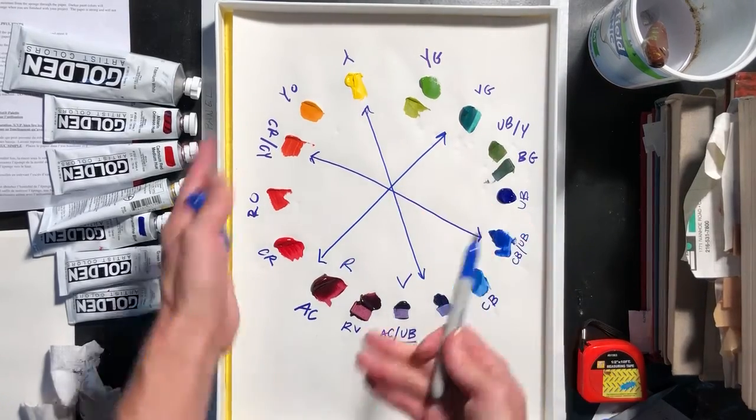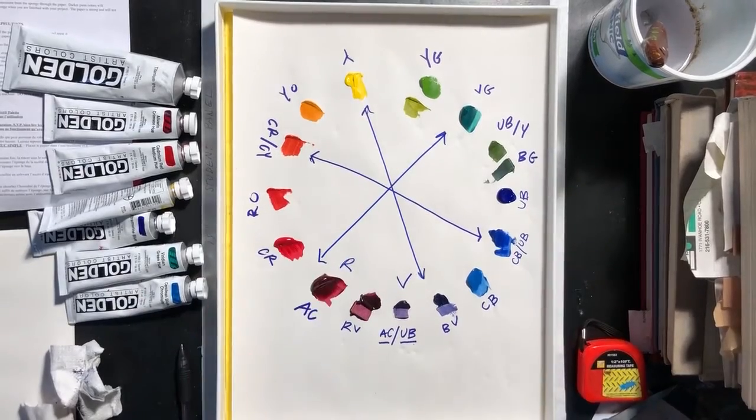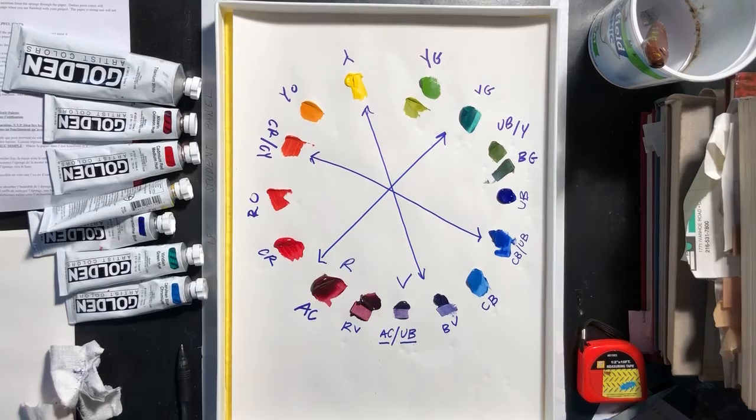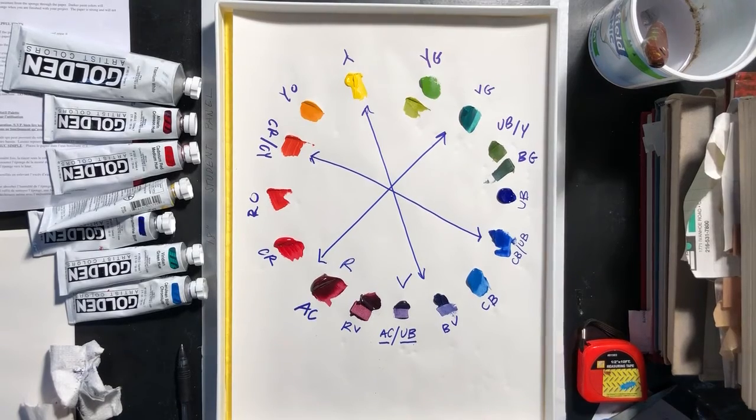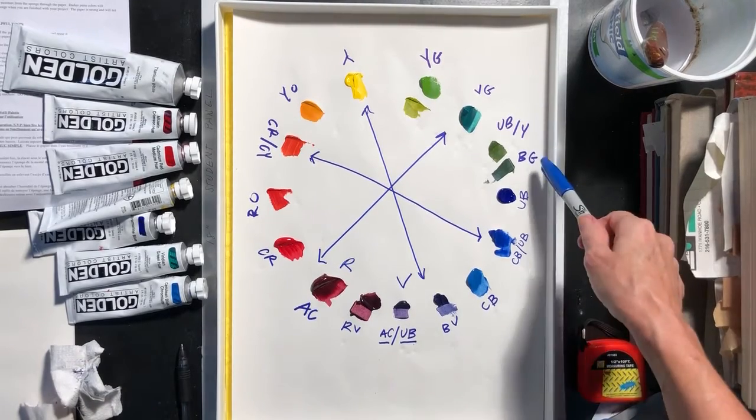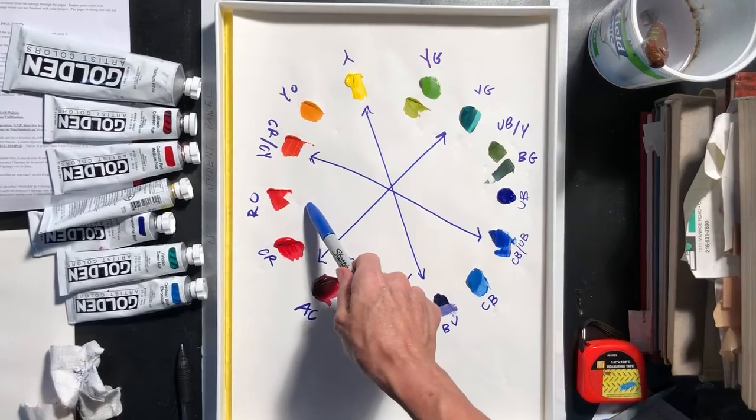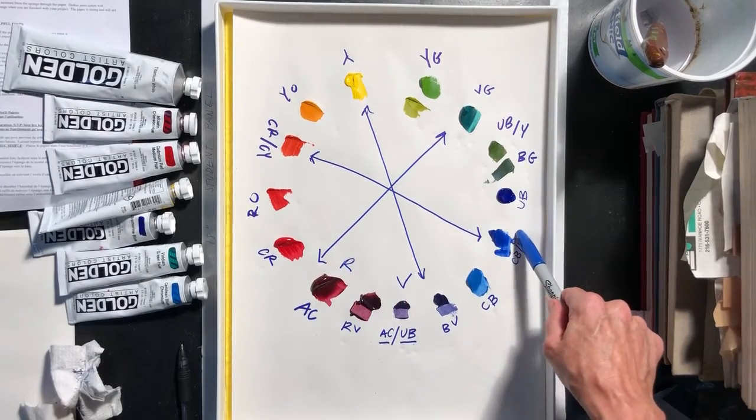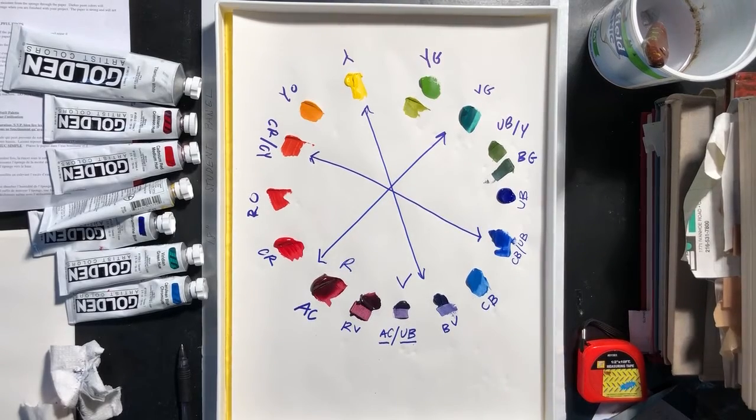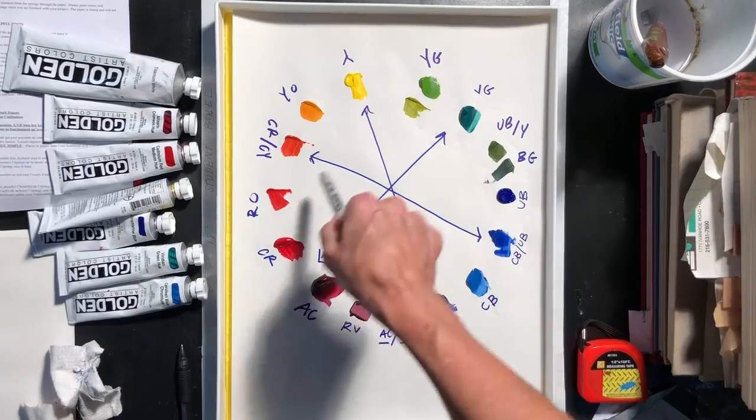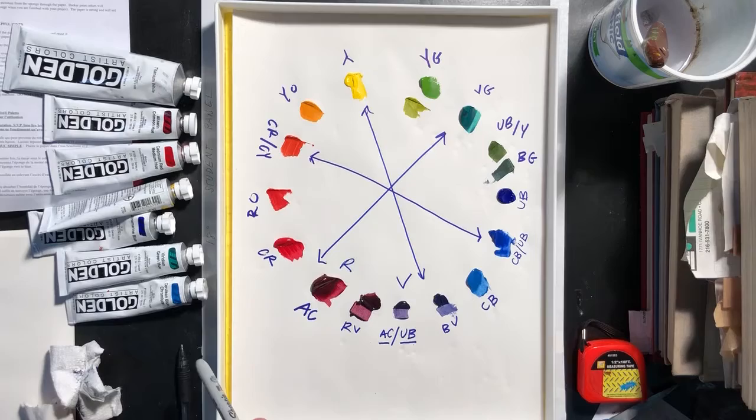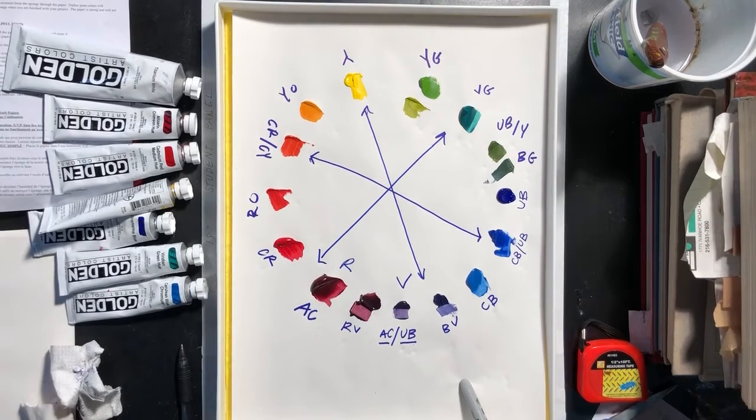And if you spin that wheel any old way, you're going to always come across some variation of a complement. Sometimes they call them split complements. So if you had a red-orange across from blue-green, then that would be a split complement. But anyway, that's more complex. This is really all I want you to know for right now is how your palette translates into a color wheel.